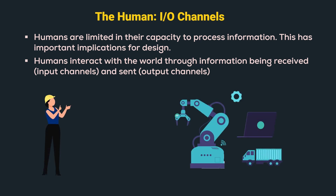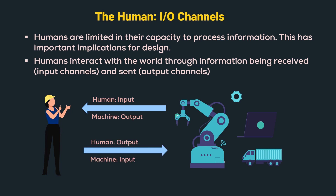Here, a human is interacting with a machine. In interaction with a machine, the user receives information that is output by the machine and responds by providing input to the machine. Thus, the human's output acts as input to the machine, and the machine's output acts as input to the human. Now let us understand all these channels one by one.